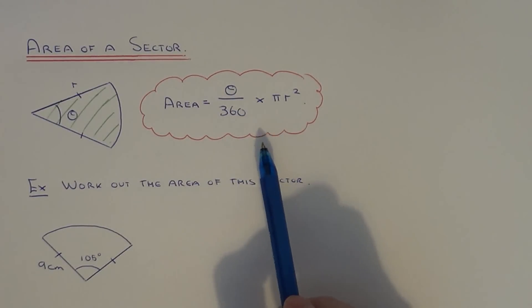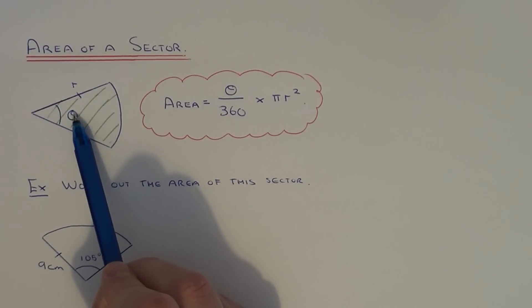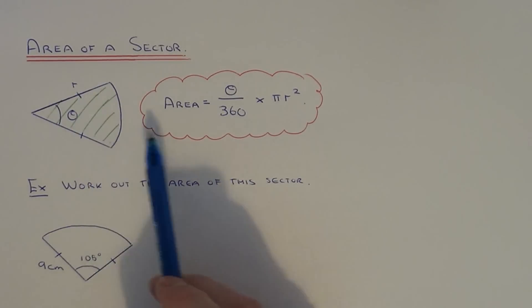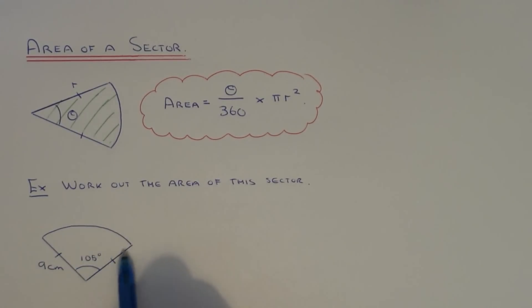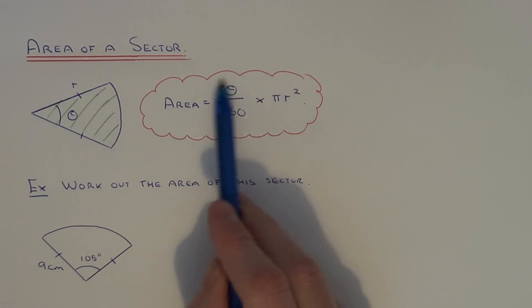As I said all we need to do is substitute the angle which is theta and the radius. Let's have a look at example 1. We have to work out the area of this sector. This sector has an angle of 105 and it has a radius of 9cm. We just need to substitute these two numbers into this formula.